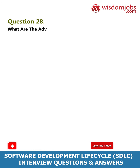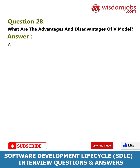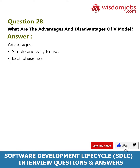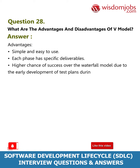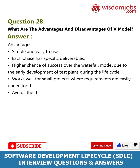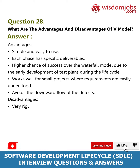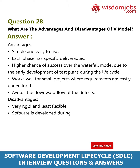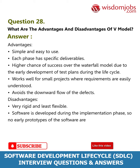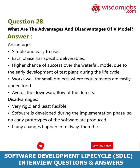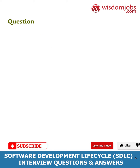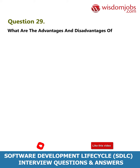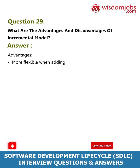Question 28: What are the advantages and disadvantages of the V model? Answer — Advantages: Simple and easy to use. Each phase has specific deliverables. Higher chance of success over the waterfall model due to early development of test plans. Works well for small projects where requirements are easily understood. Avoids the downward flow of defects. Disadvantages: Very rigid and least flexible. Software is developed during the implementation phase, so no early prototypes are produced. If any changes happen midway, the test documents along with requirement documents have to be updated.